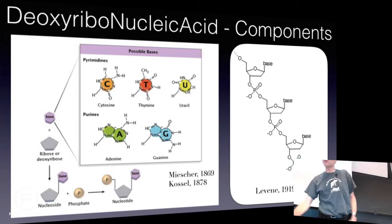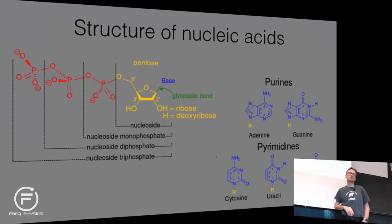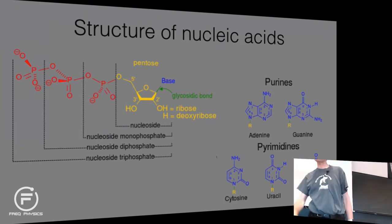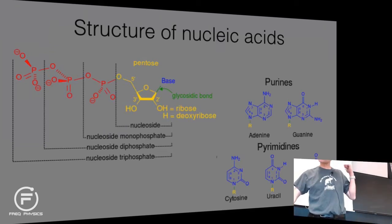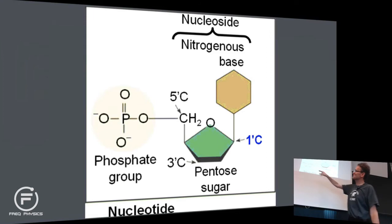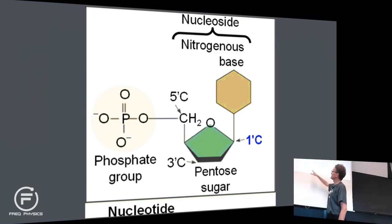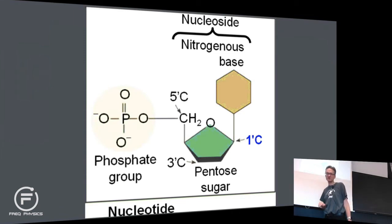There are a bunch of different ways you can look at the structure. The whole thing is called a nucleotide, and it consists of a phosphate, a sugar, and the sugar and base together are called the nucleoside — which includes a nitrogenous base. This is a classical exam question: I will show you the molecule and ask you to name the different components. These have been known since the early 1900s.